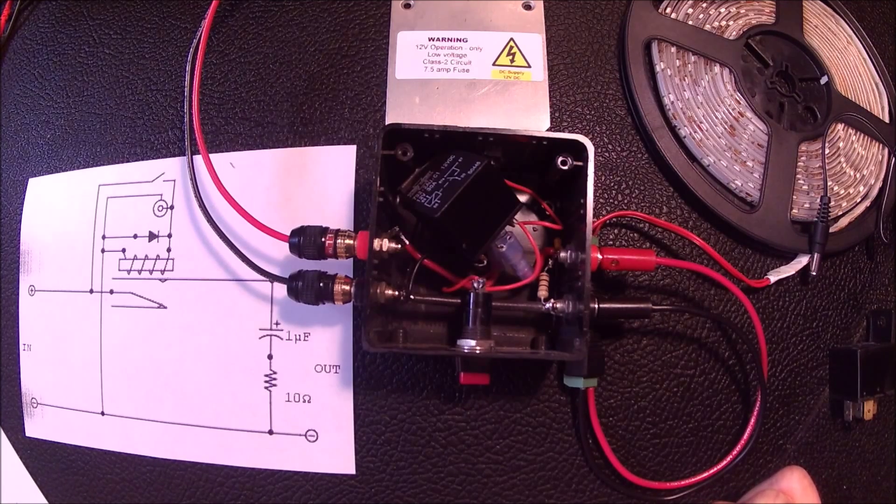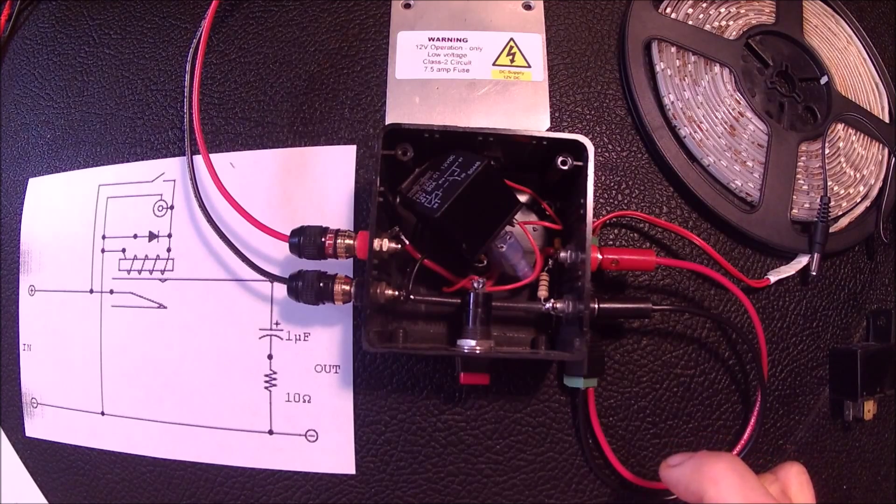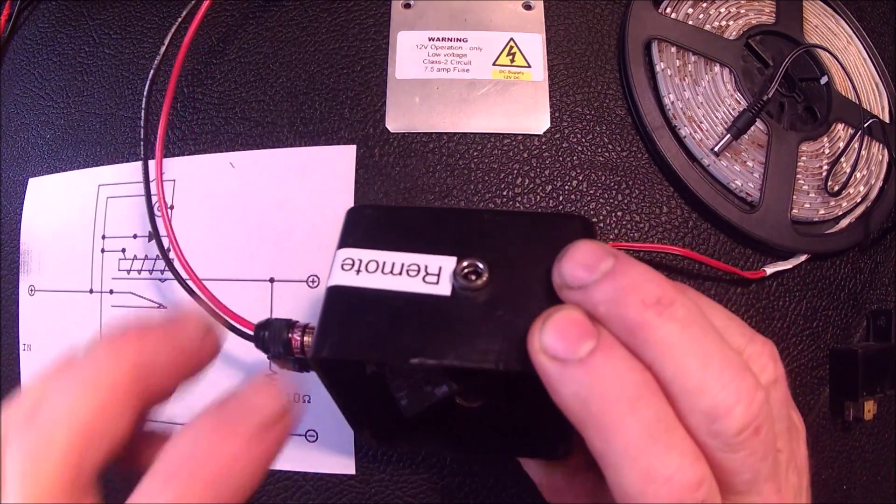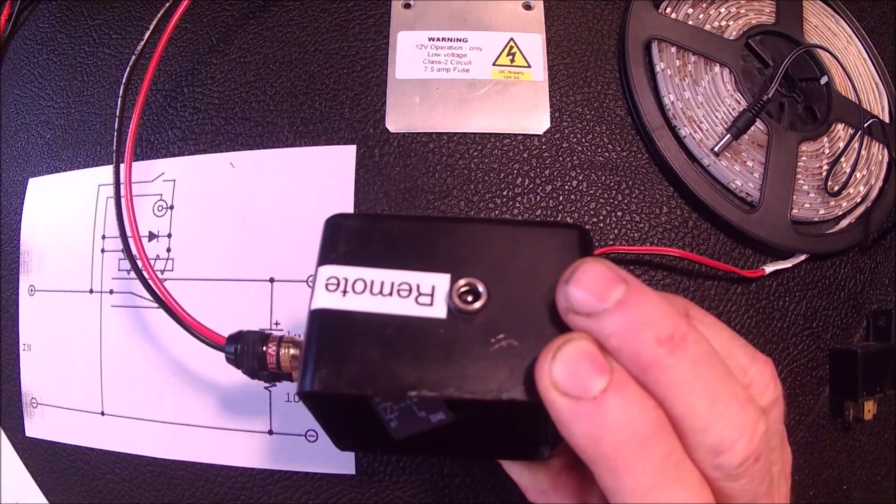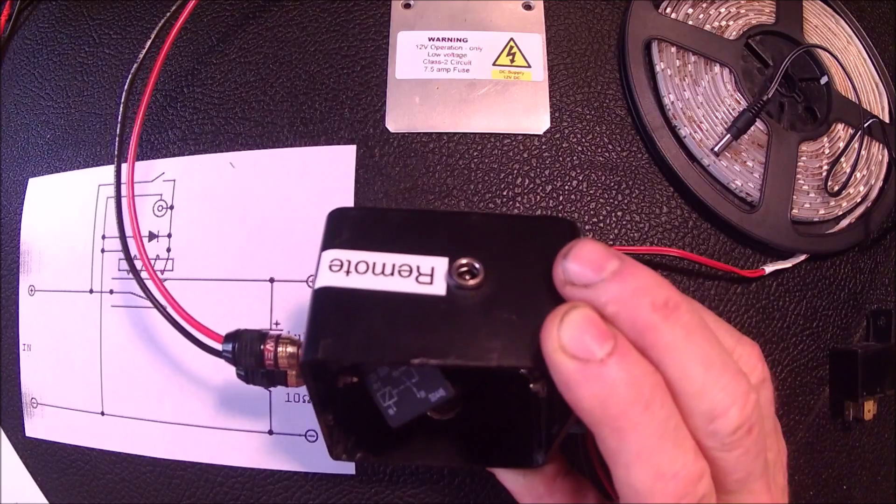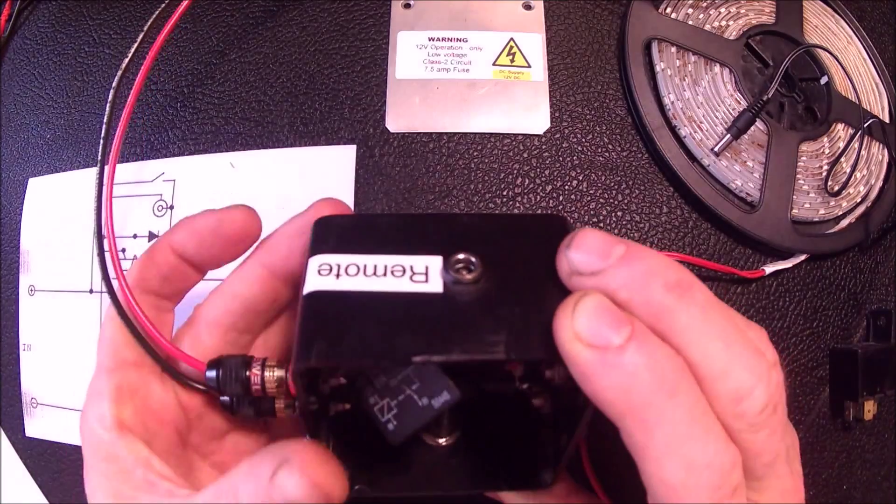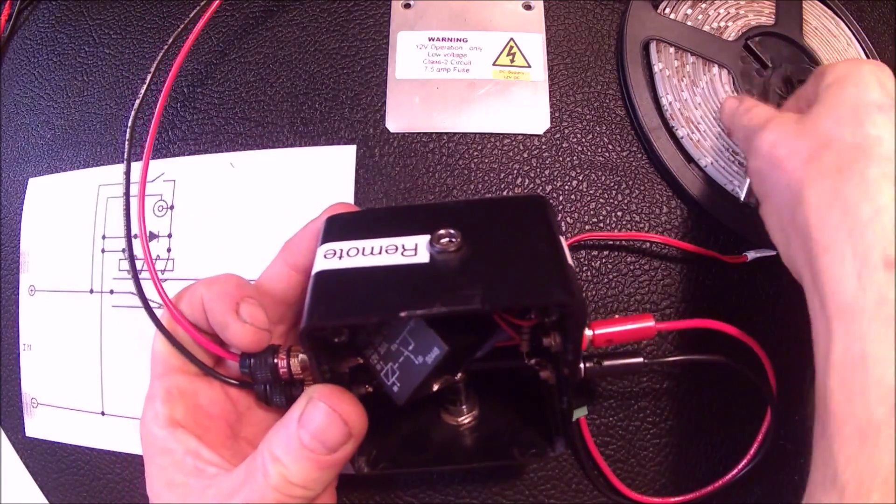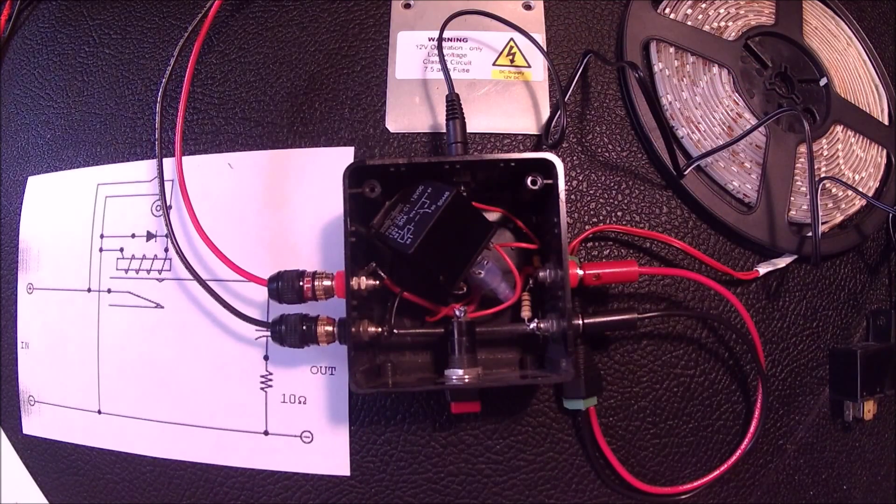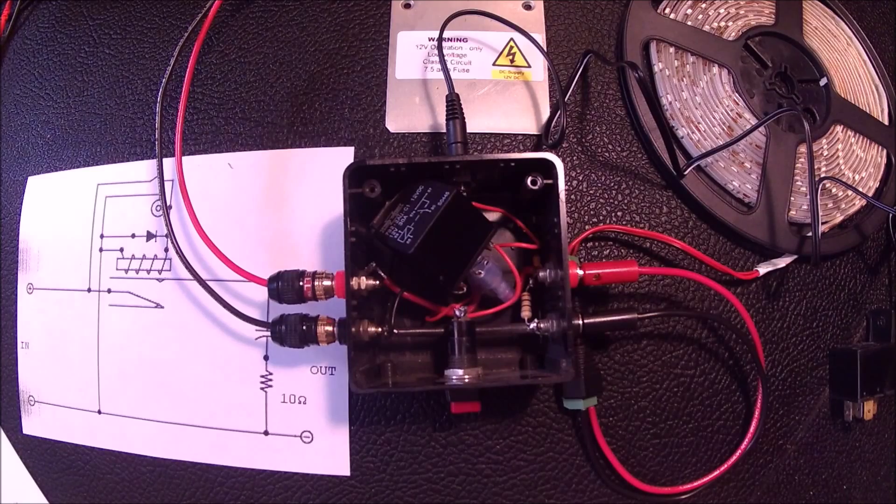You could just as easily use wire nuts or other types of connectors, not saying you must use banana plugs. Then there's this 5.5 by 2.1 millimeter coax power jack here that accepts a plug from the 12-volt wall supply for remote operation. So this is what lets me safely connect to the house wiring using a UL listed class 2 wall transformer.